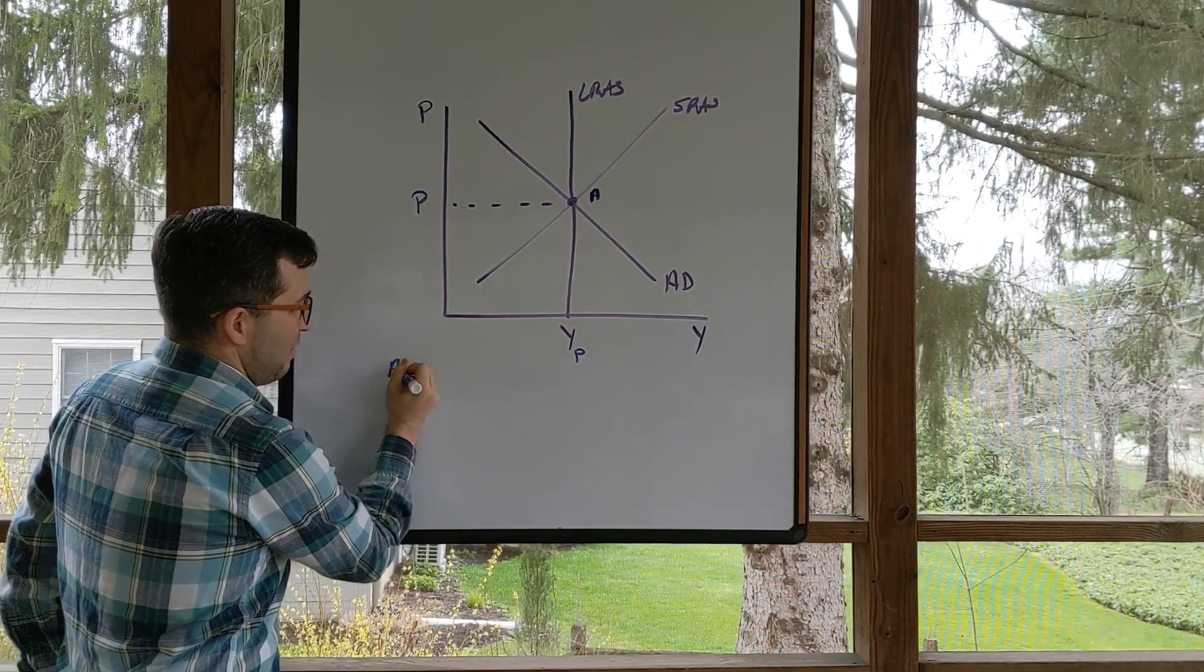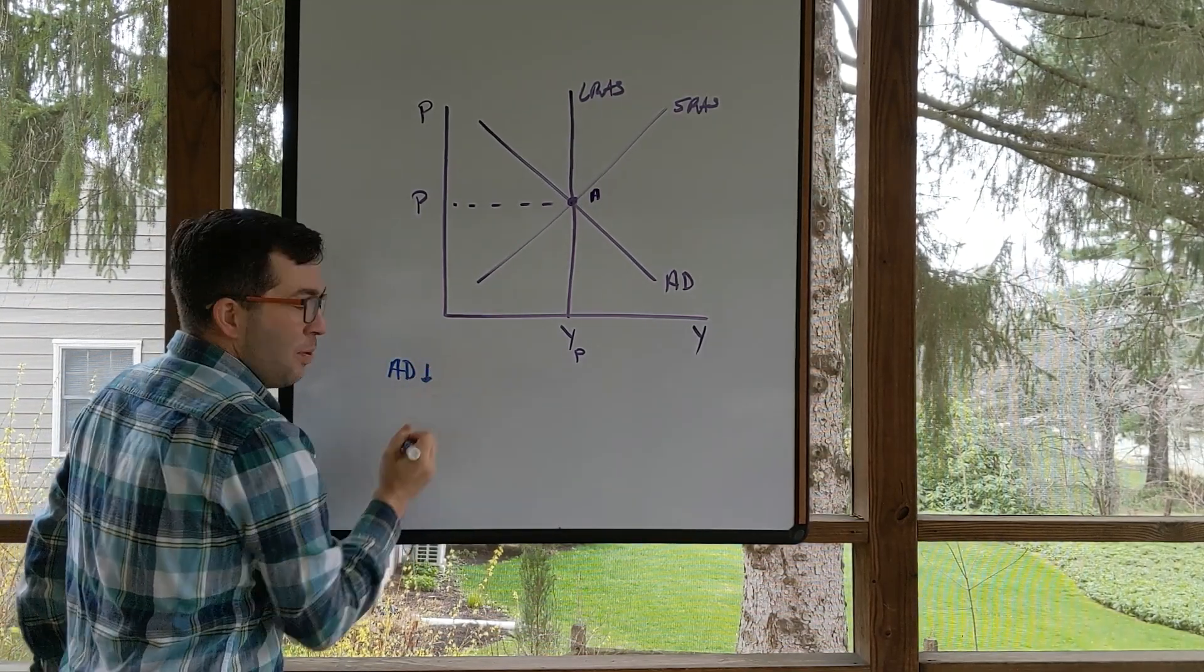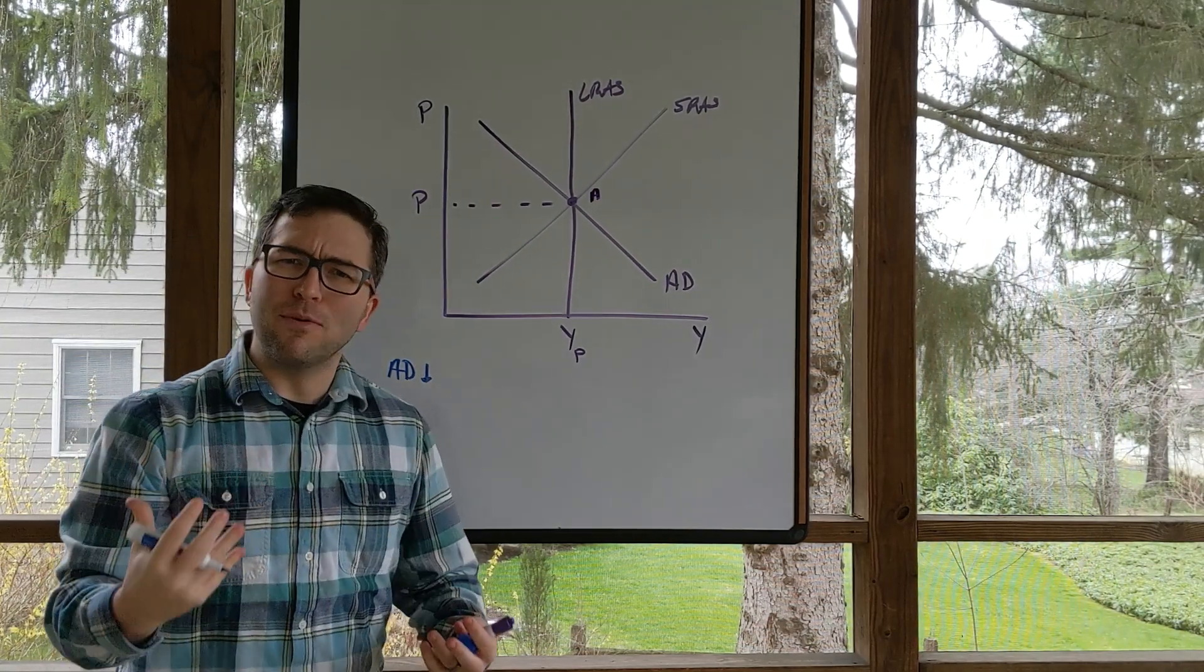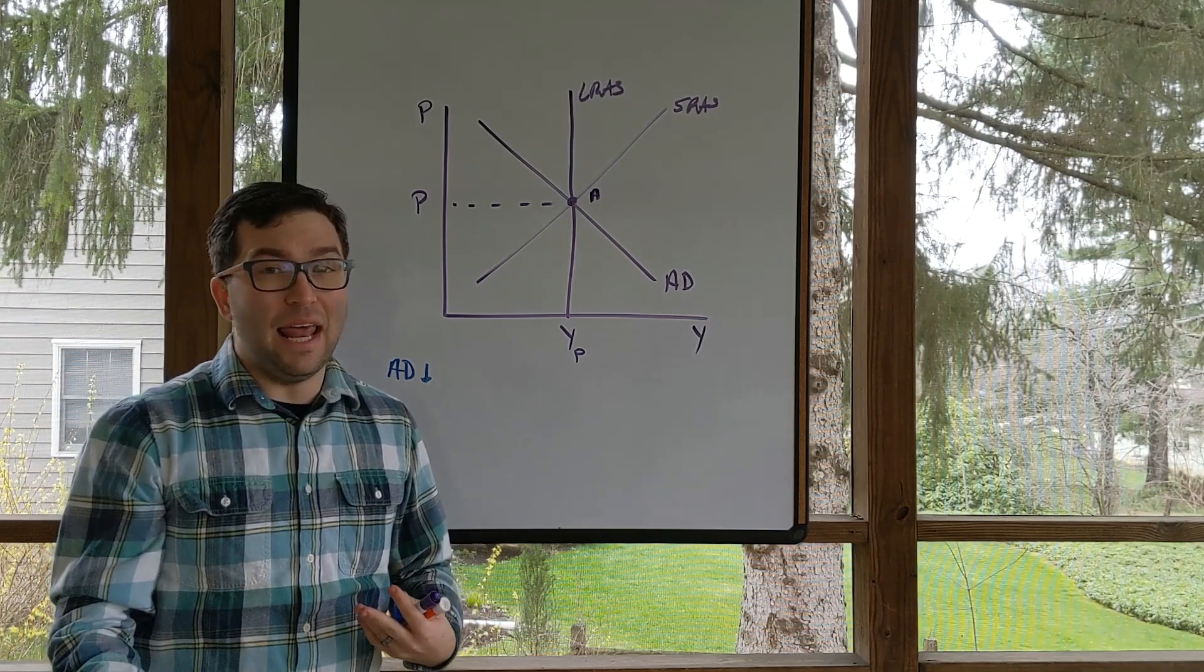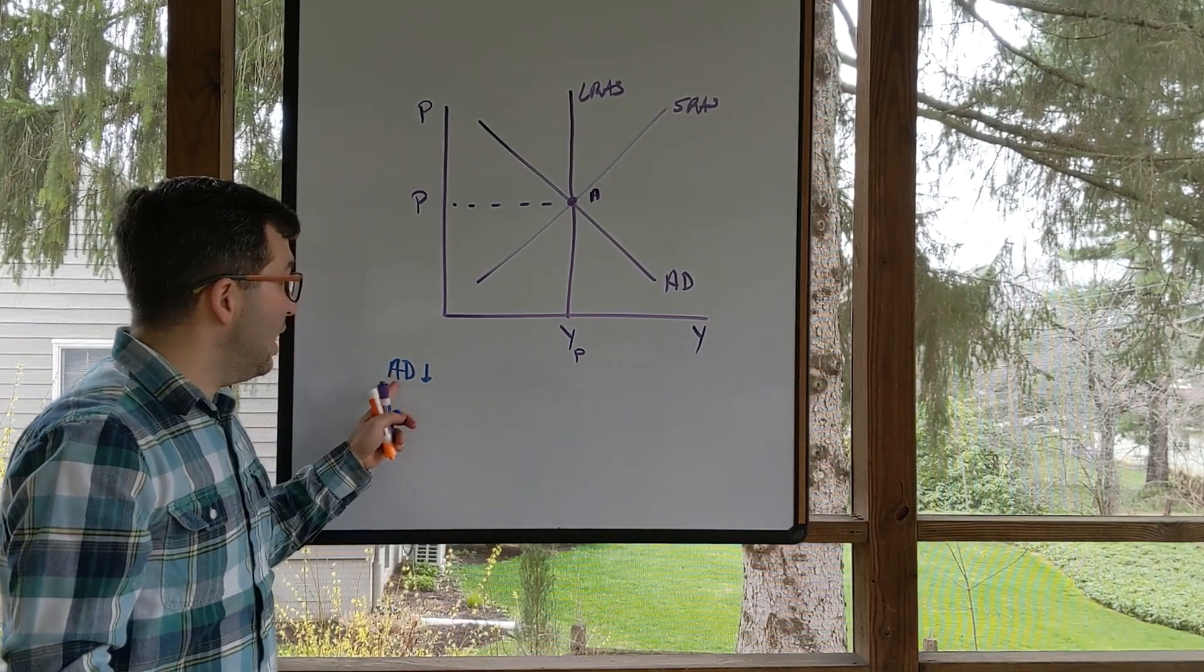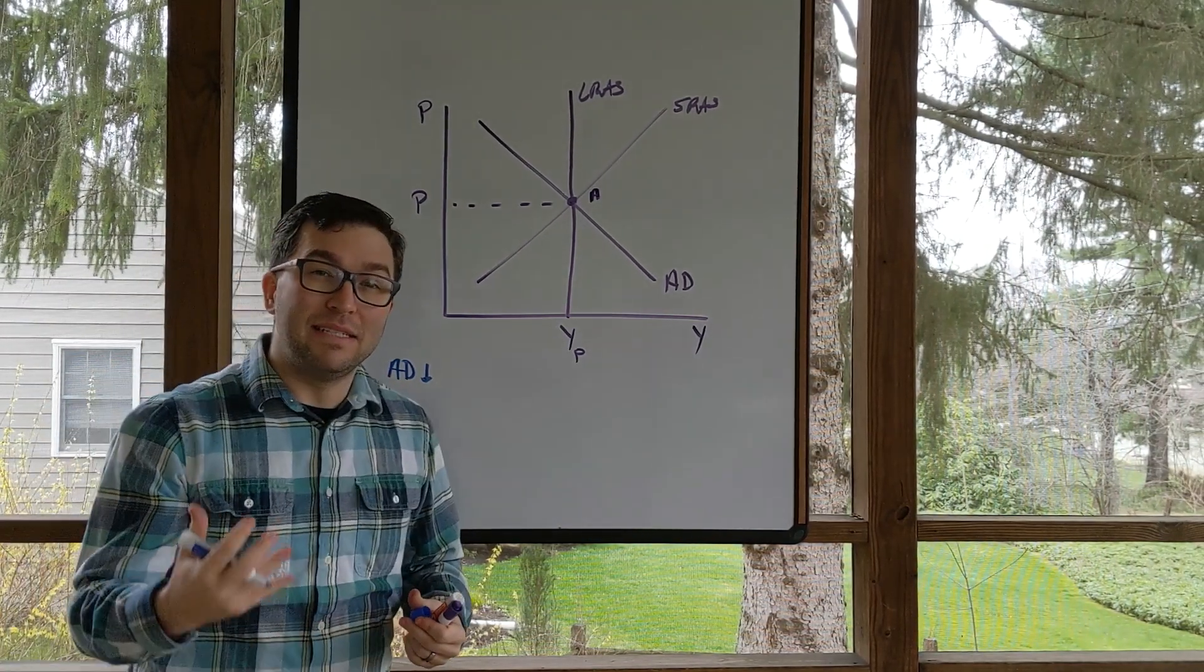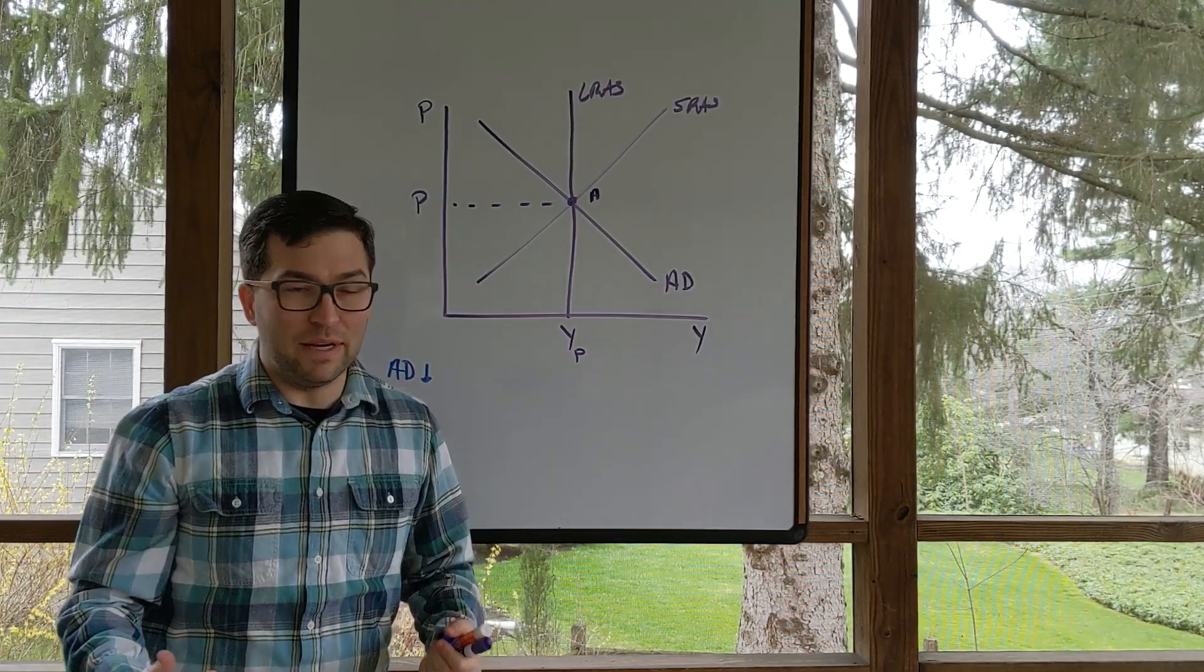So let's say aggregate demand falls. Perhaps the reason is because consumer confidence falls. Aggregate demand, remember, C, I, G, and NX. So a decrease in aggregate demand could be caused by that decrease in consumer confidence or many other things.